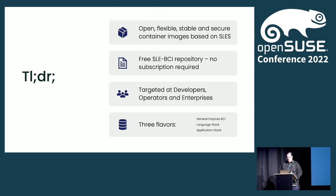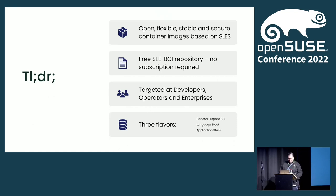The BCI containers come in three flavors. We have a general-purpose set of BCI containers, a growing number of language stack containers, and we are also building application containers. For SLES, we have containerized RMT, we started containerizing 389DS, and with the projects ahead of us this number will grow significantly.